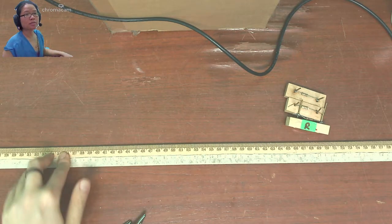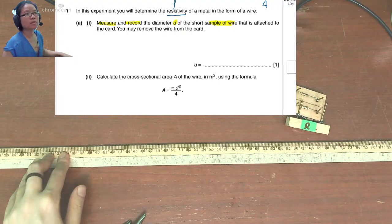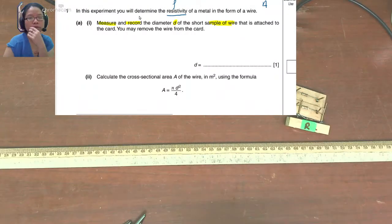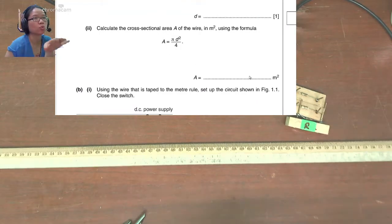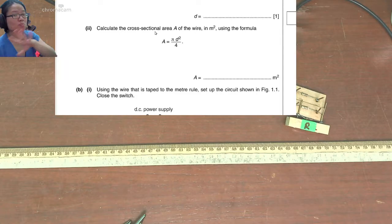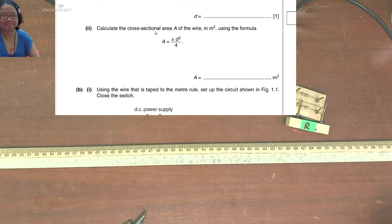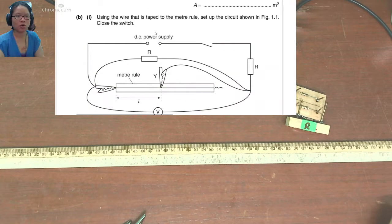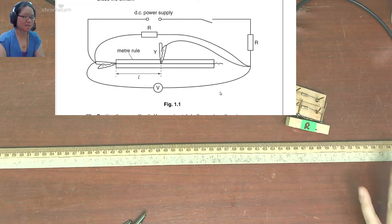So the next part — let's look at our lab manual. Calculate the cross-sectional area of the wire. You know what to do. Just make sure you don't lose marks: look at the unit, look at the significant figures. And here, what we have is a DC power supply. We're going to connect the circuit once again.